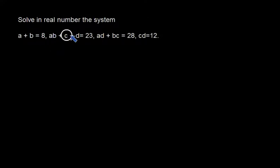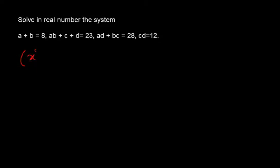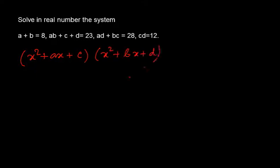Now this question is serving a particular purpose. If I see A plus B, then AB plus C plus D, AD plus BC, and CD as terms, then we can actually think about two quadratic polynomials — like if we consider (X² + AX + C) into (X² + BX + D).